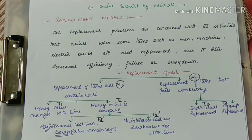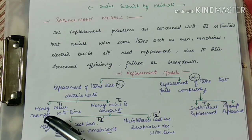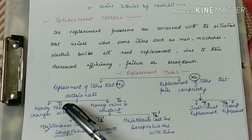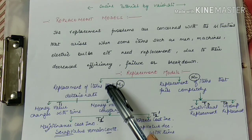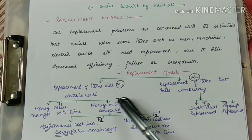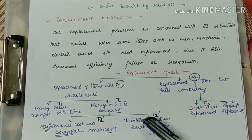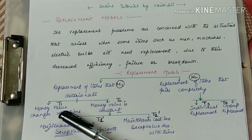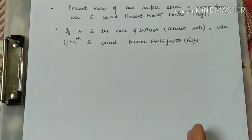Hello, good morning. I am Vishadi. Today I am going to explain the replacement problem, third example. This third example will be under the category of replacement of items that deteriorates. Under this topic, I have explained when money value is constant and we have done two examples related to it. Now today I will be discussing the type where money value changes.